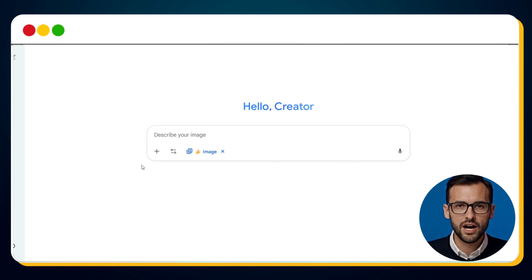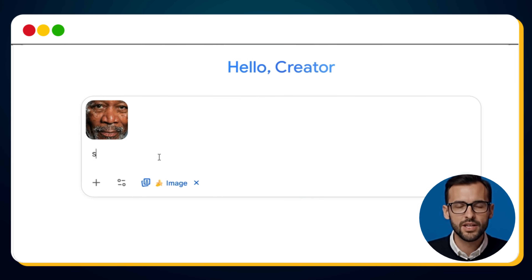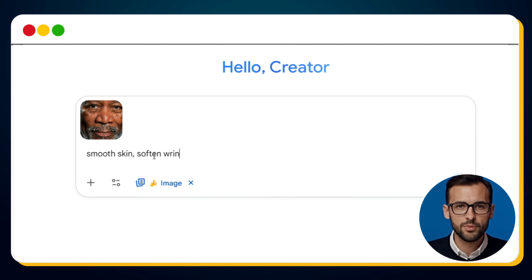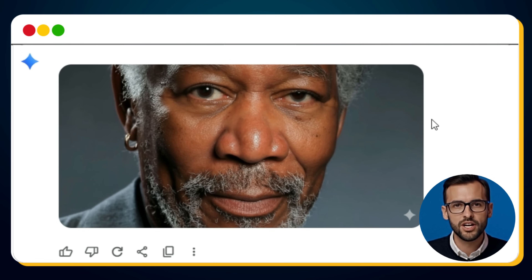You must have seen him — legendary Hollywood actor, Morgan Freeman. In this photo, his face has blemishes and dark spots, and the natural texture is clearly visible. Let's fix it using Nano Banana AI. Go to Gemini.Google.com, select the Nano Banana AI model, and upload the image. Now let's type in this prompt: Smooth skin, soften wrinkles, remove blemishes, even skin tone, soft lighting. And within seconds, here's the result.